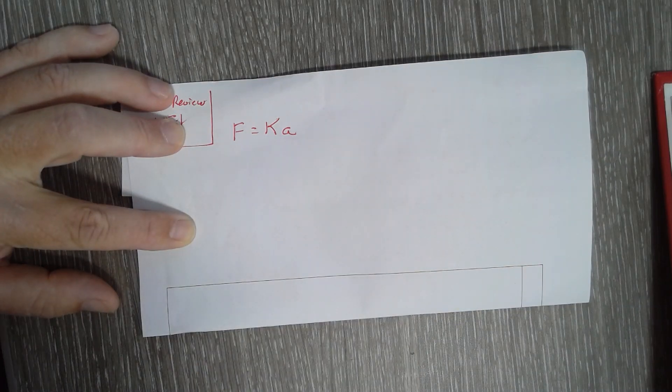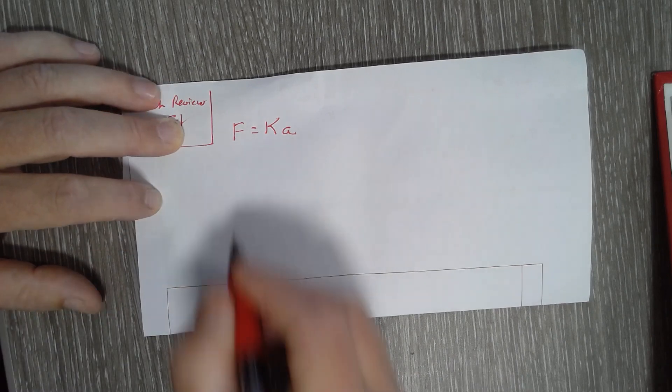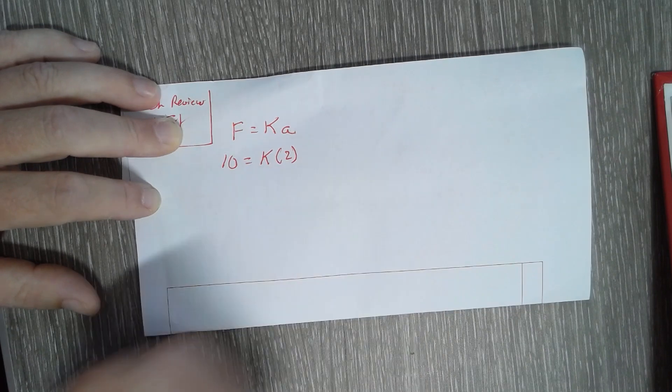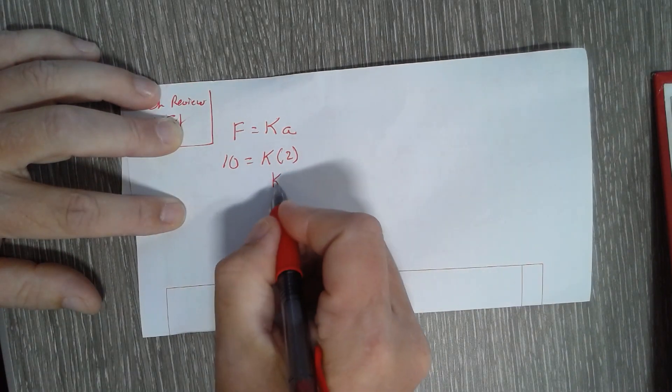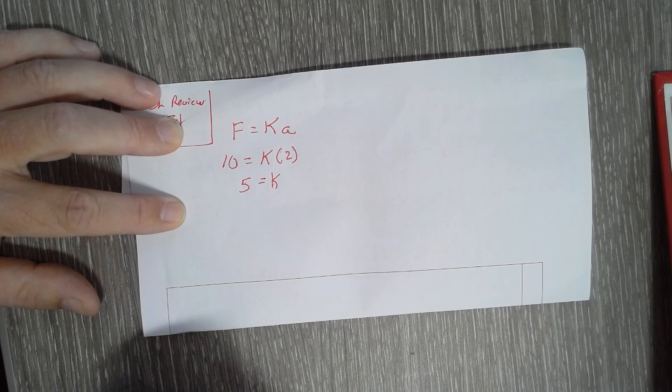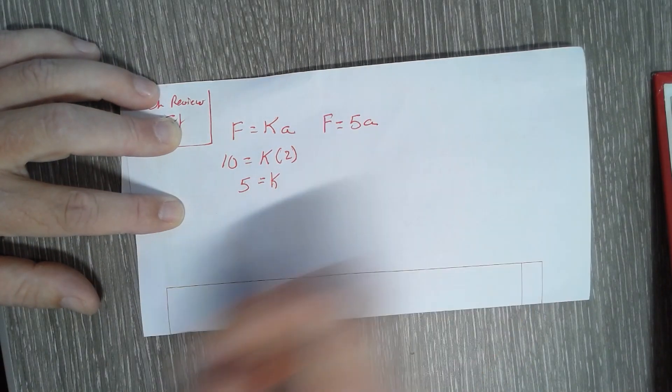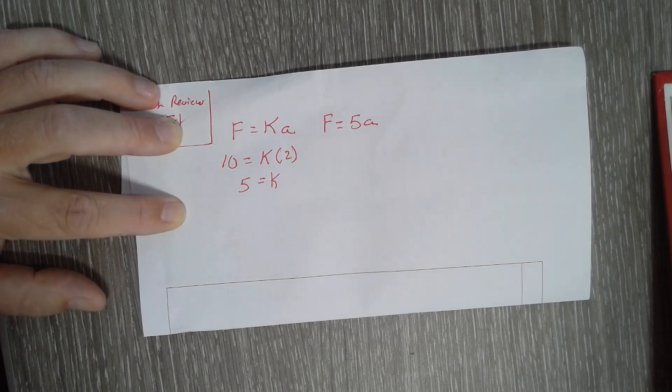It says a force of 10 pounds produces an acceleration of 2 feet per second squared. So force is 10, acceleration is 2. First, we need to find k. So 10 = k(2), divide by 2, and we get k equals 5. Now we rewrite our general equation, so force is now 5a.